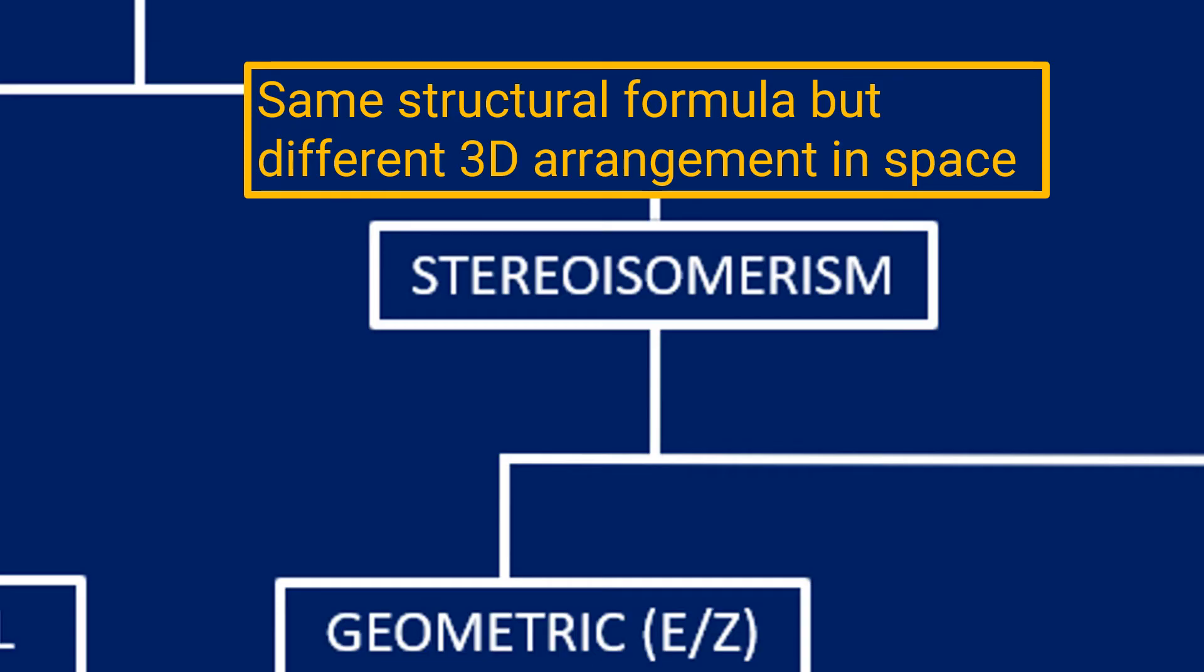Definition for a stereoisomer: they have the same structural formula but different 3D arrangement in space. Notice how that's a different definition to your structural isomer. Your structural isomer had different structural formula and same molecular formula. This time for a stereoisomer, they do have the same molecular formula, they do have the same structural formula, but it's a different arrangement in 3D space.